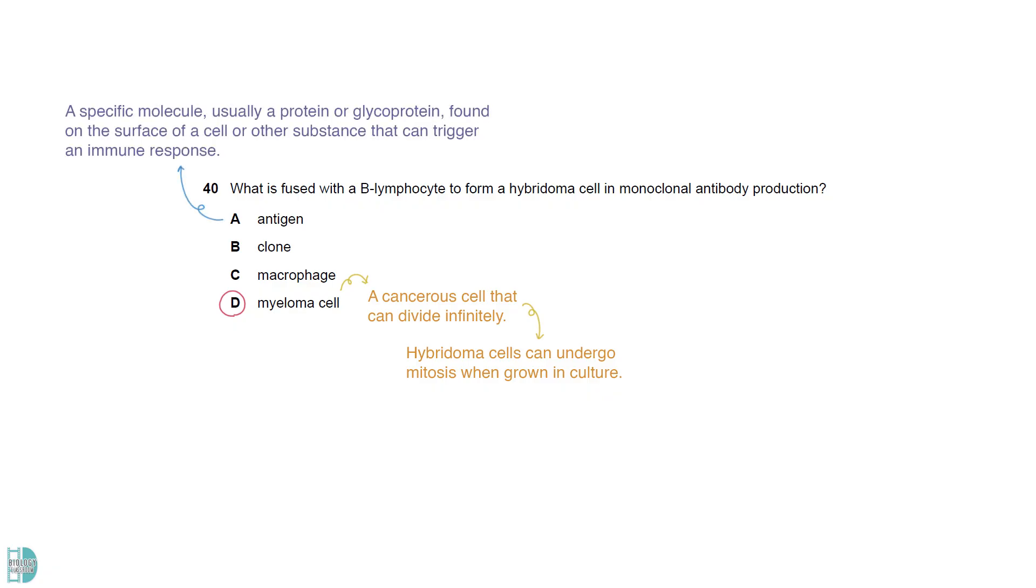An antigen is a specific molecule, usually a protein or glycoprotein, found on the surface of a cell or other substance that can trigger an immune response. In immunology, a clone refers to a group of cells descended from a single cell. A macrophage is a type of white blood cell that engulfs foreign particles and dead or damaged cells through a process called phagocytosis.